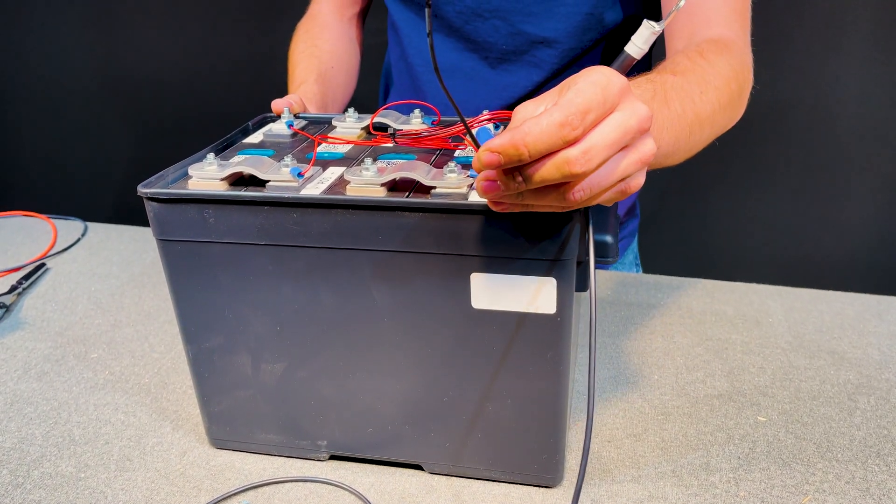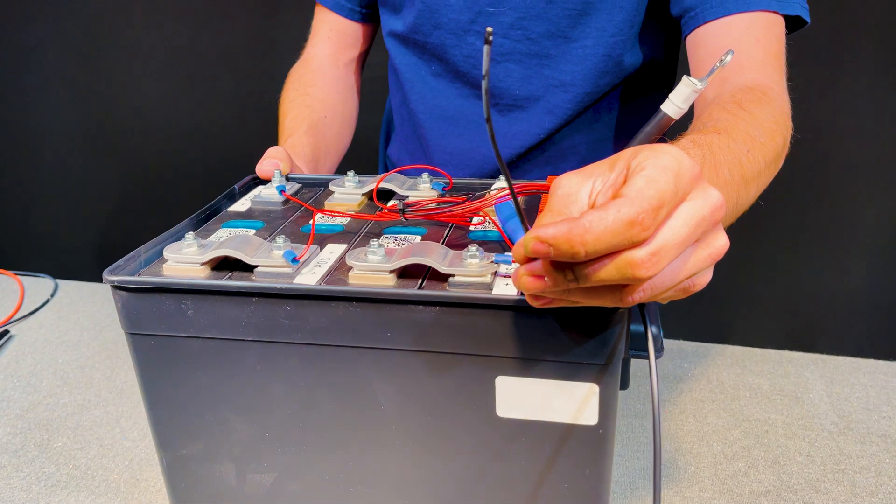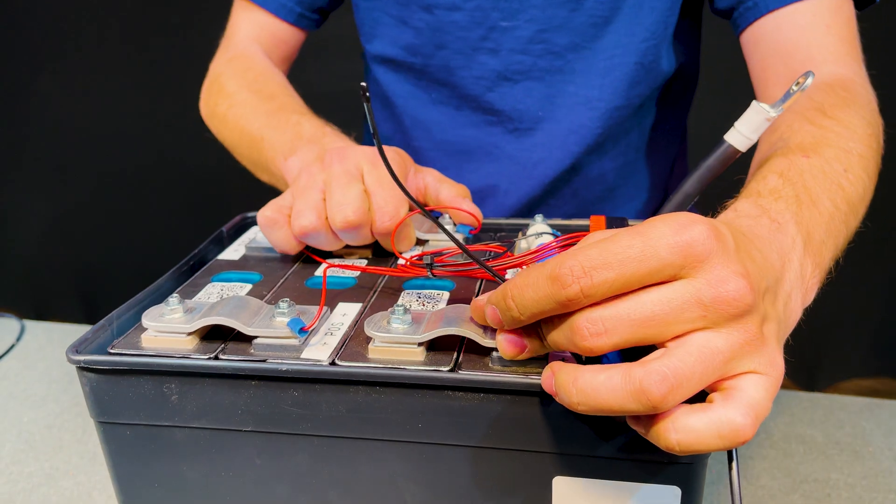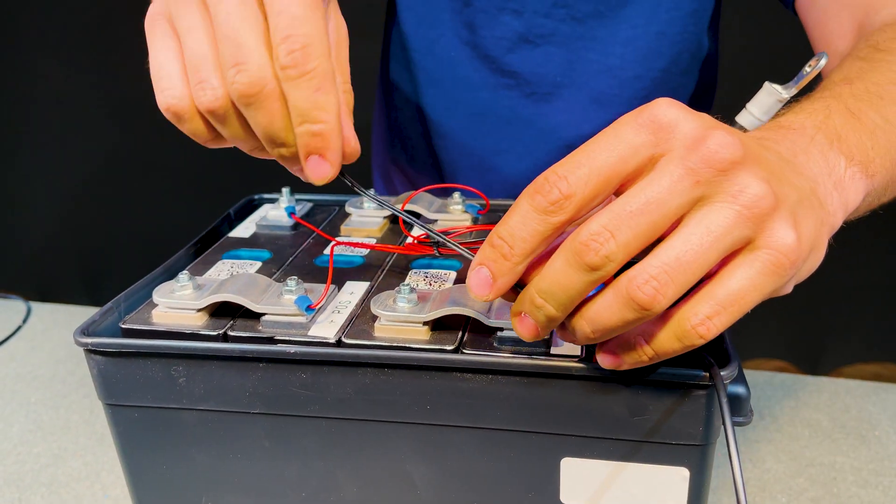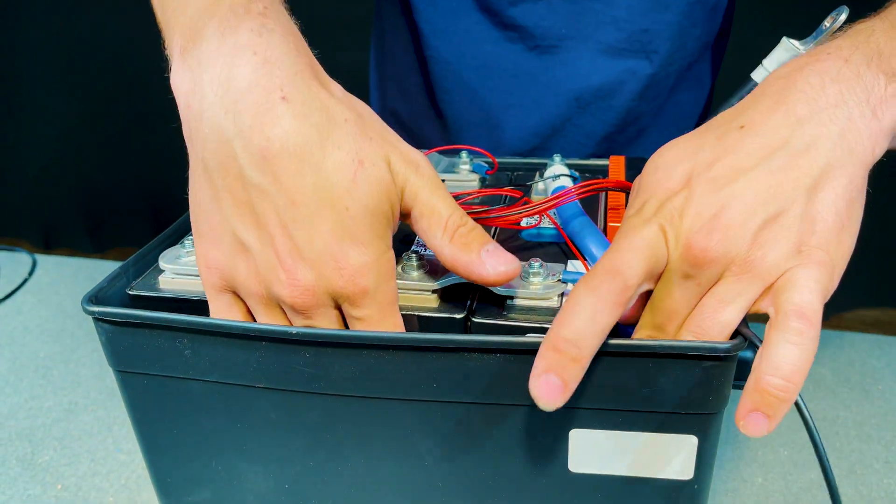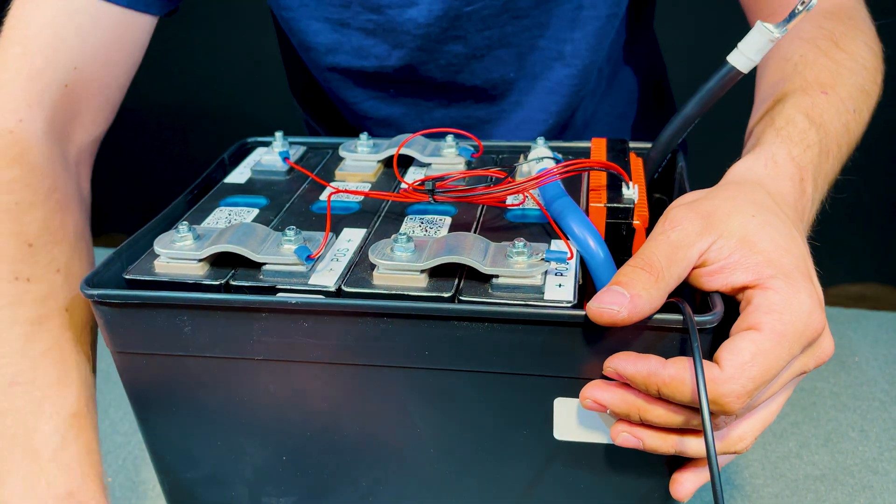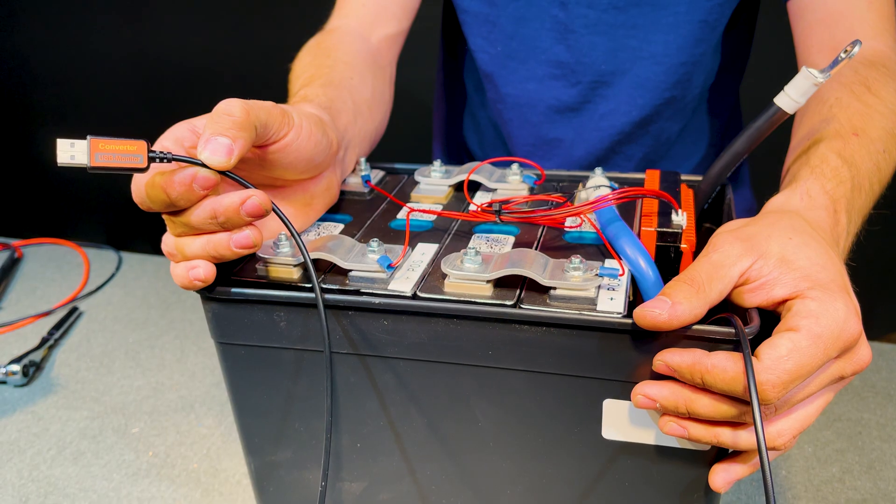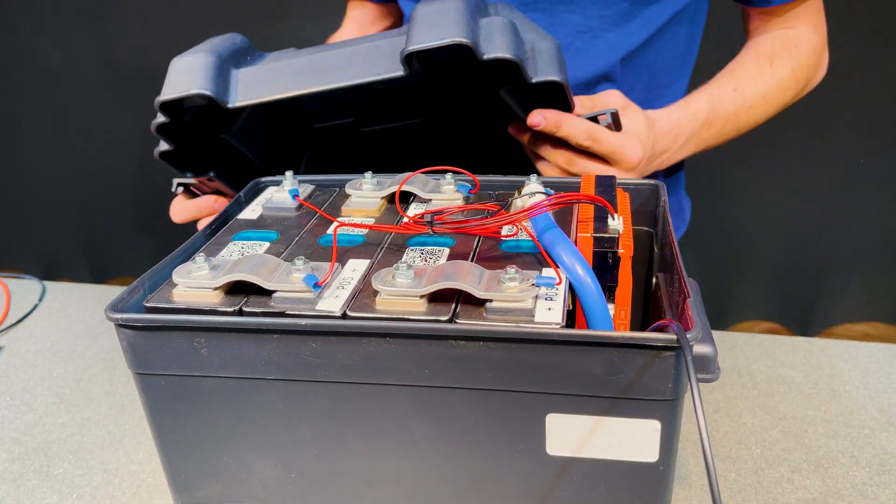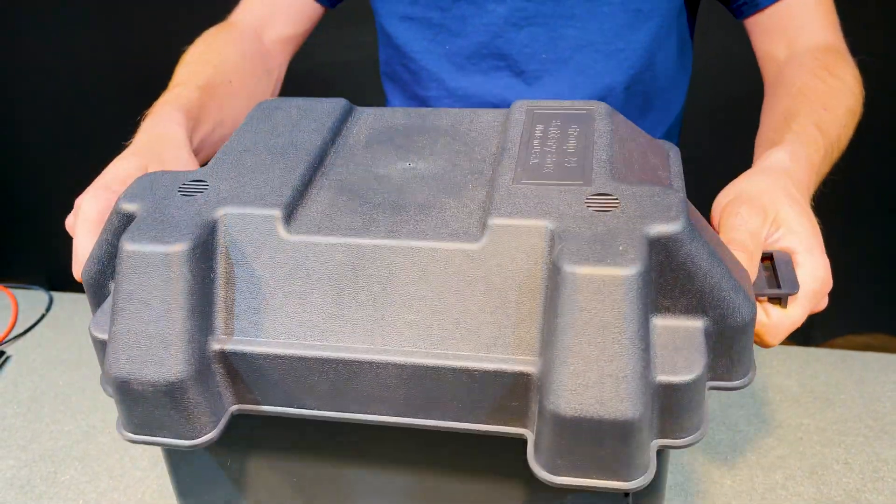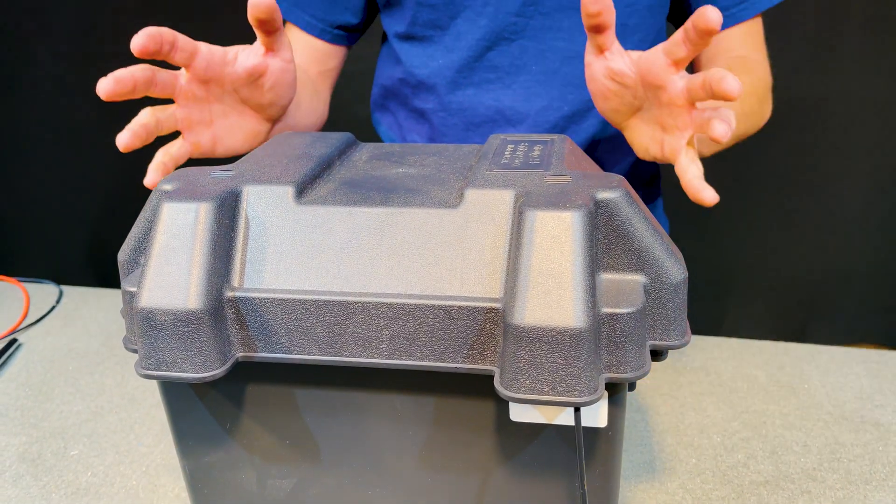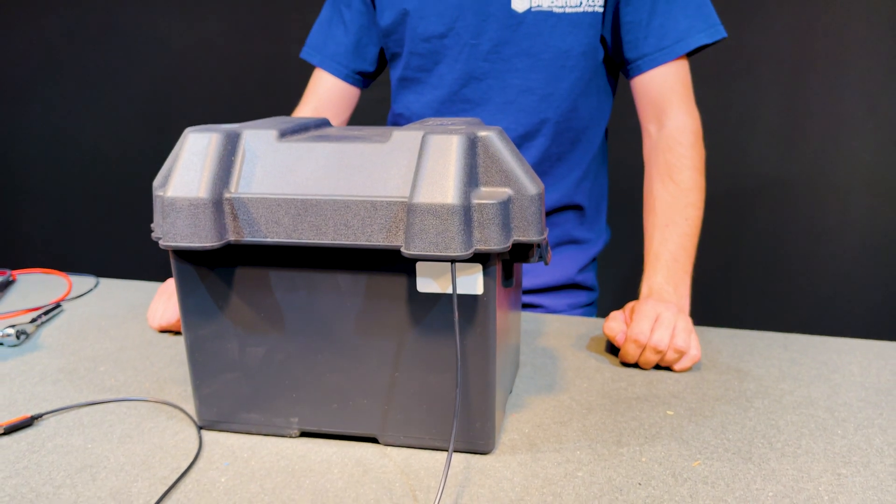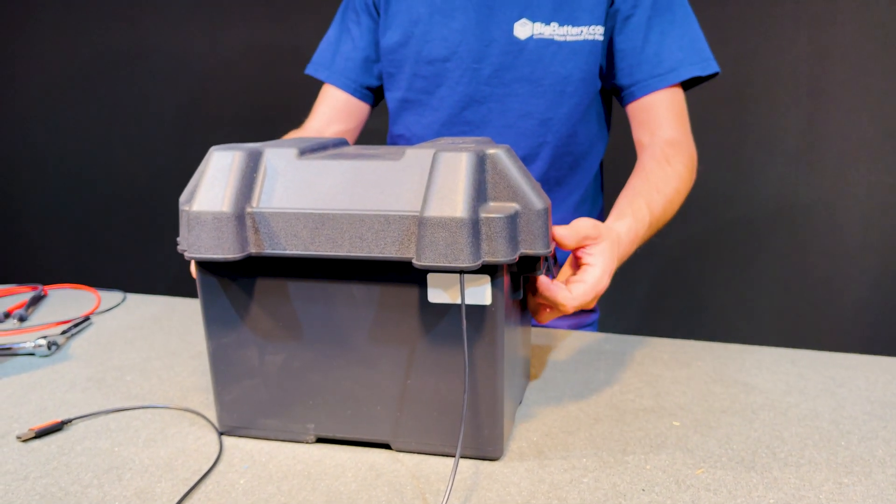This is the temperature sensor and what this does is make sure that these batteries don't charge when freezing. Charging these batteries below freezing would damage them so that can just be tucked into the side of this battery box and if you want to use the USB monitor you can plug this into your computer. For our video I want to show you how nicely this lid goes on. It's that easy and now you have the power of a lithium iron phosphate battery and you don't have to pay an arm and a leg because you built it yourself.